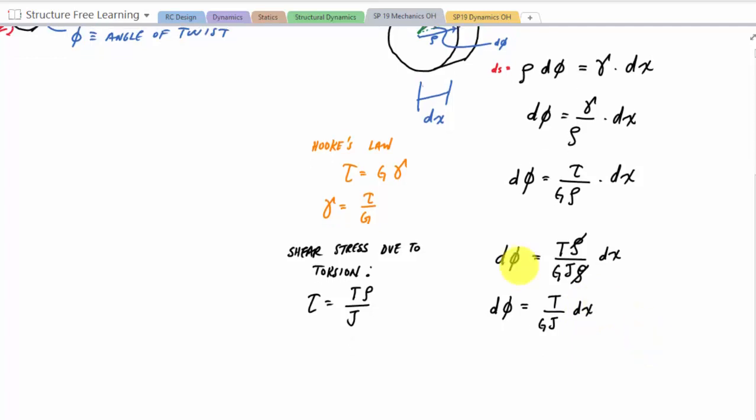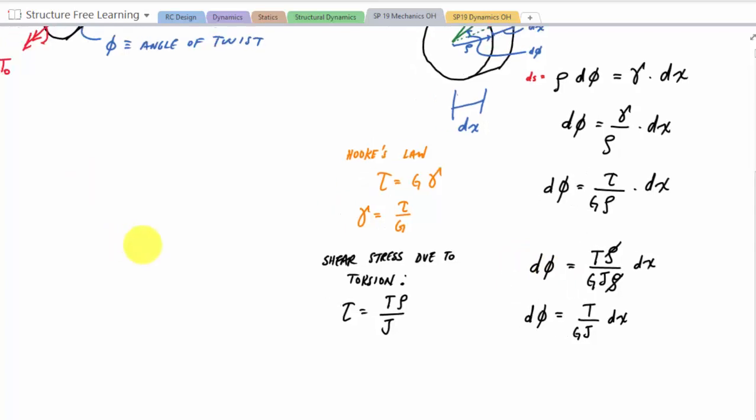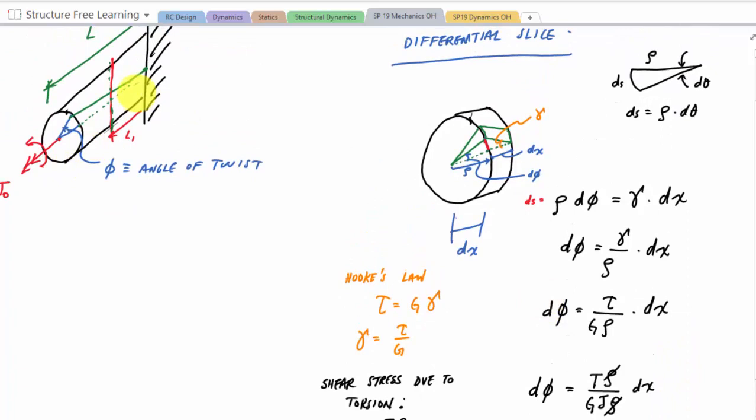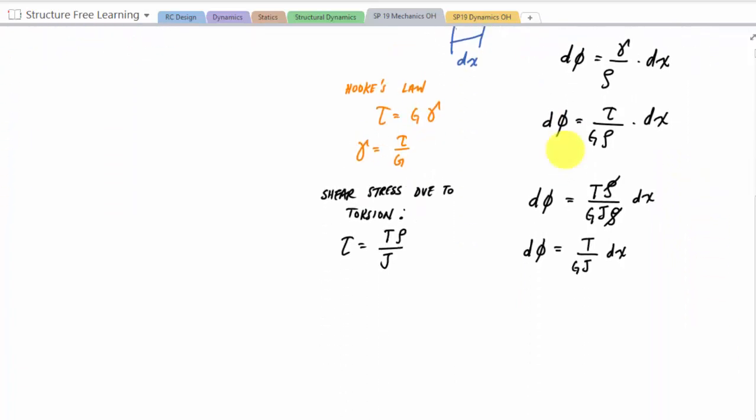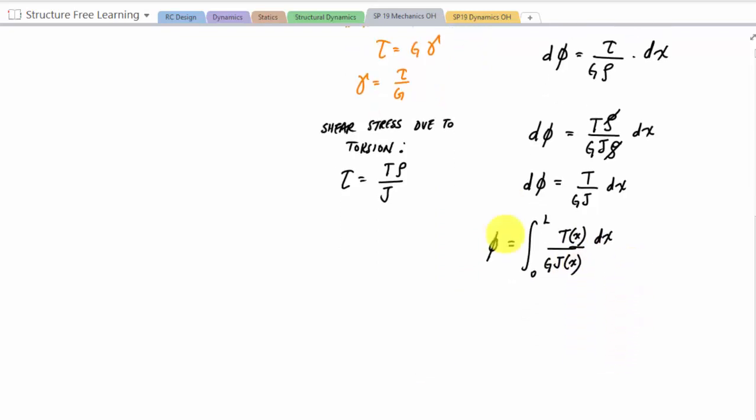So now if I have a length, an entire length of a segment, that means if I just integrate to get the entire angle twist over that length, then all I have to do is integrate. And so here, phi, the angle of twist, would be from whatever length I need, the integral of t dx over g j. And depending on the rod, this internal torque can be varying, or depending on the loading, or if I have a tapered rod or something, my polar moment of inertia could be varying.